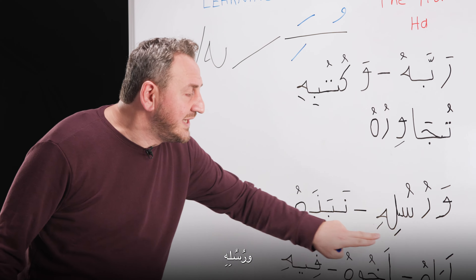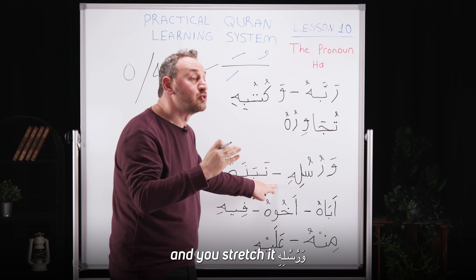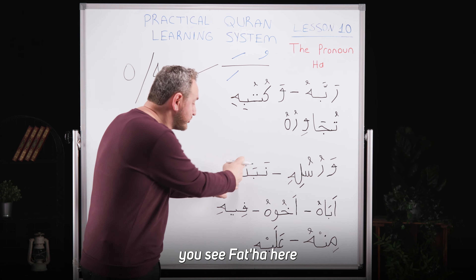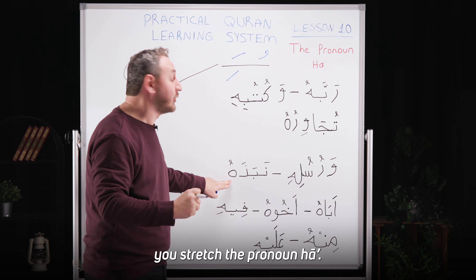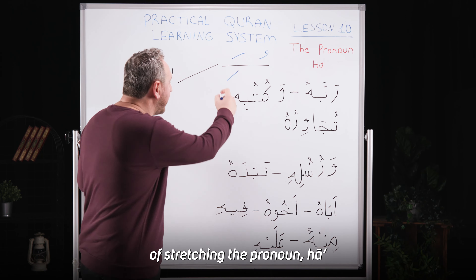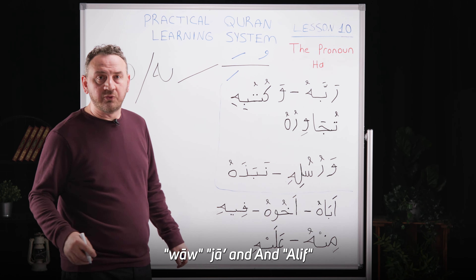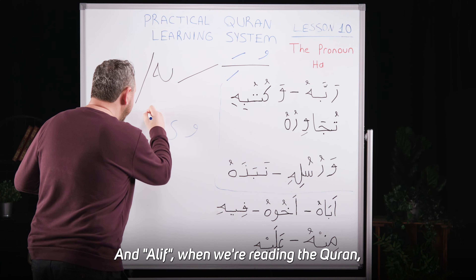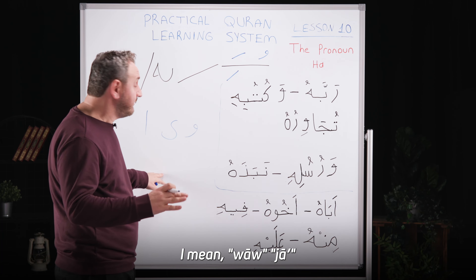You stretch the pronoun Ha two times. Let's look at other examples — you can see there is a kesra here and you stretch it, and here there is a fatha and you stretch the pronoun Ha. So far we have seen examples of stretching the pronoun Ha, applying this rule with the letters vav, ya, and elif.